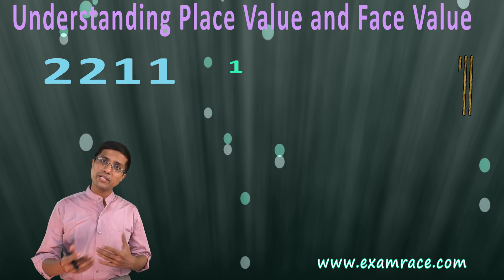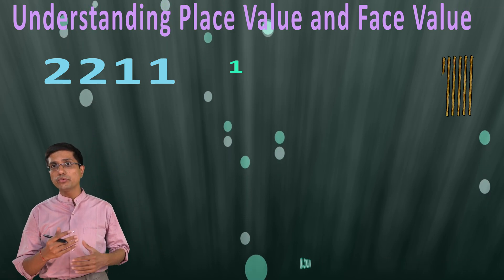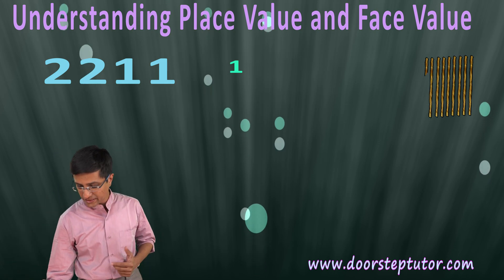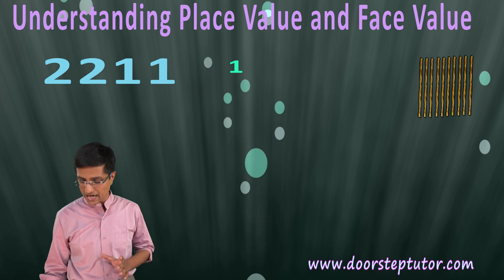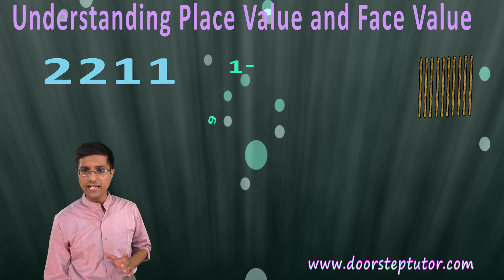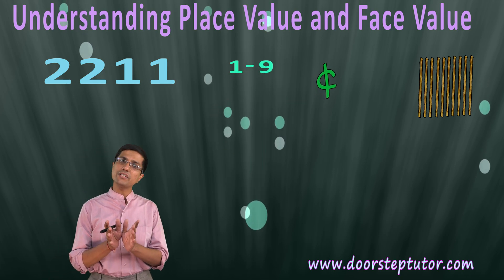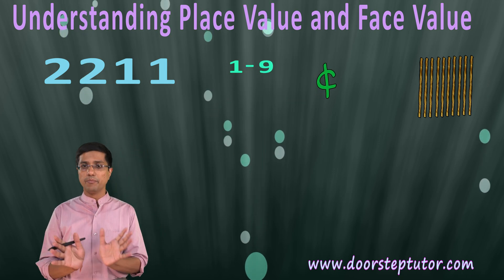The counting then progresses. So, I have one, then two, three, four, five, six, seven, eight, nine sticks of wood. So until nine, I have devised different symbols — from one to nine, I have devised different symbols for counting these numbers.